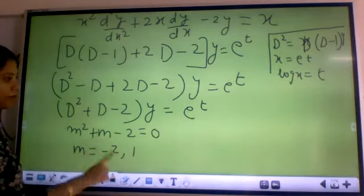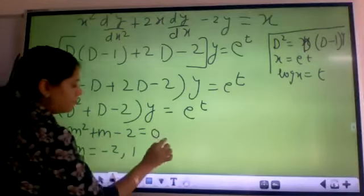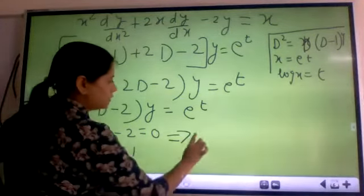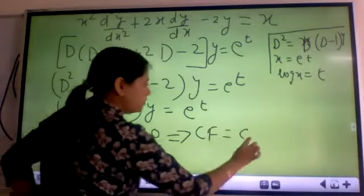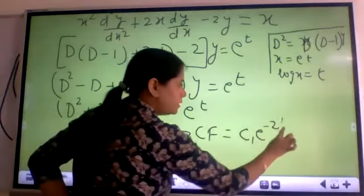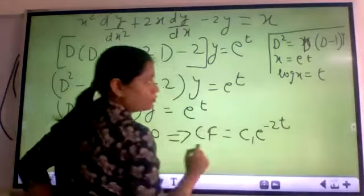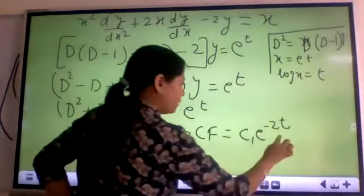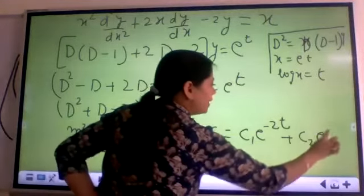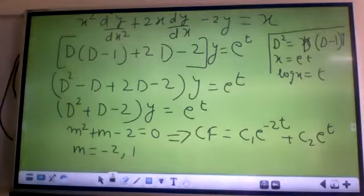If m is equal to minus 2, 1, implies CF is equal to c₁ e^(-2t) - remember now it will come t because of the substitution we have taken - plus c₂ e^t. Correct?